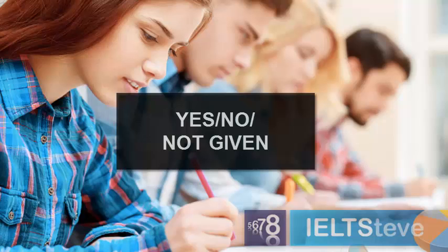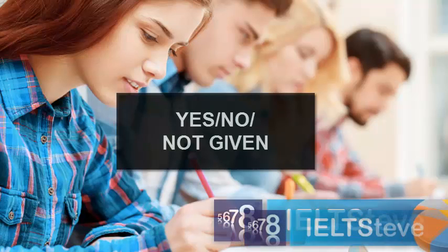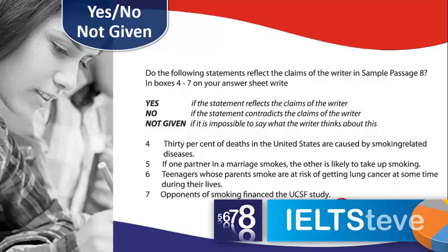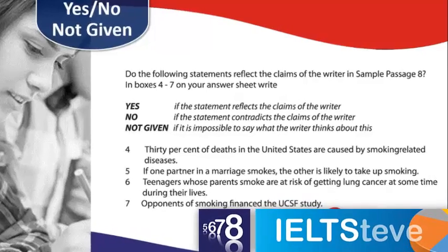Now let's have a look at some particular question types. We need to be clear about what those questions involve. First of all, let's look at Yes/No/Not Given questions. When we're considering these, we need to think about the keywords and the instructions. It's saying Yes, No, or Not Given — we cannot write Y or N because it's saying write Yes or No.